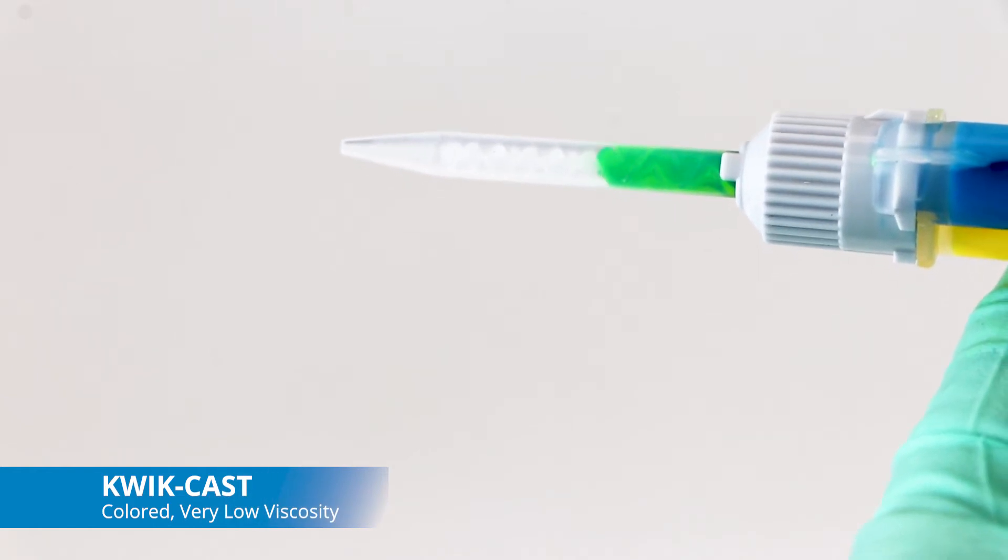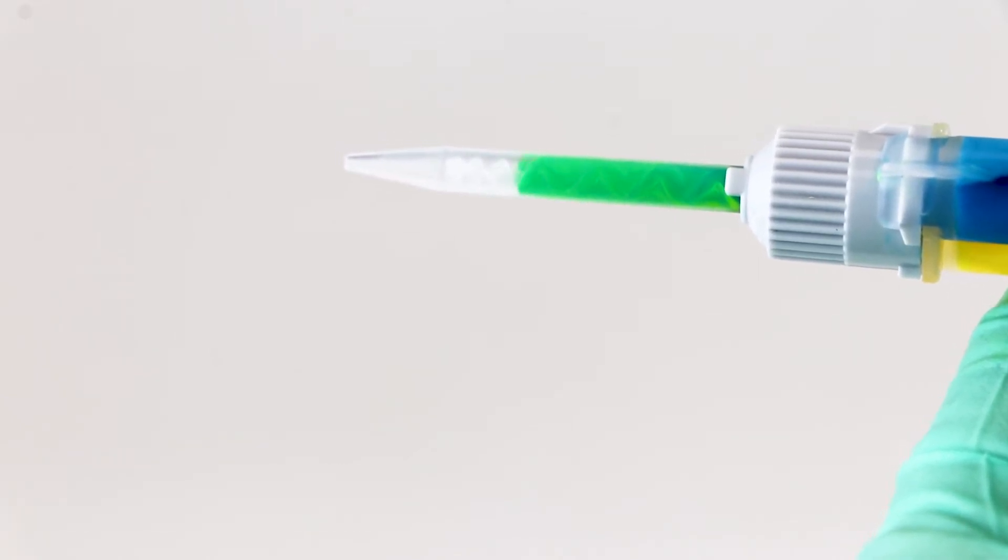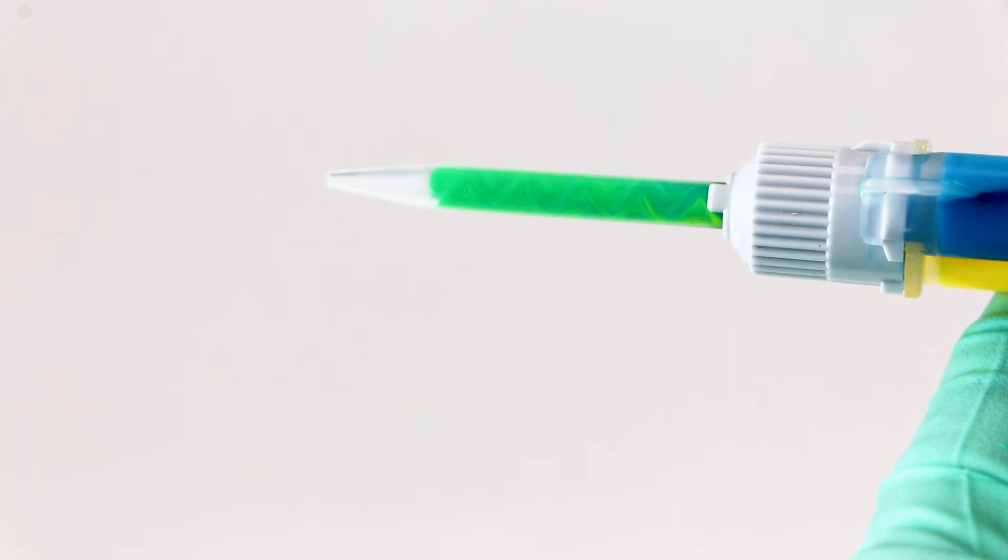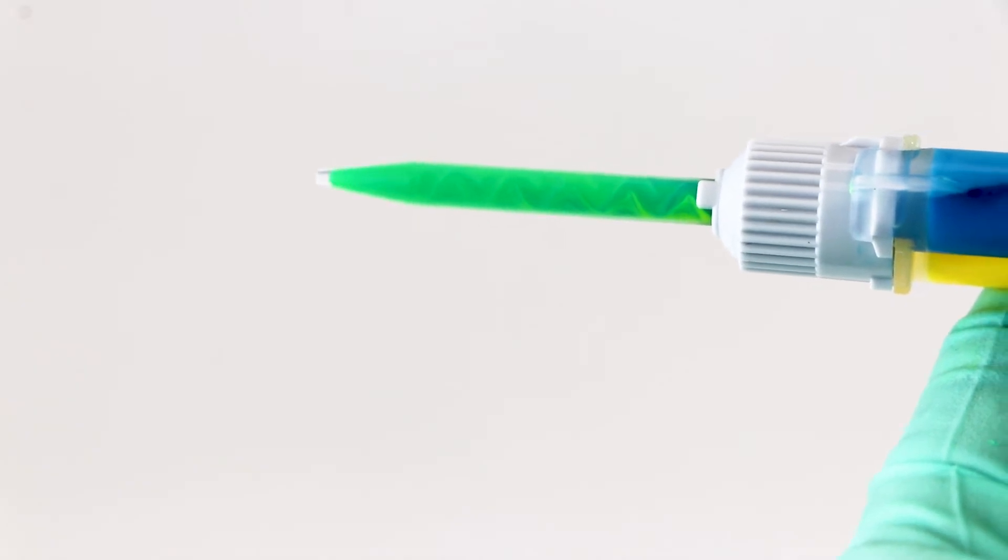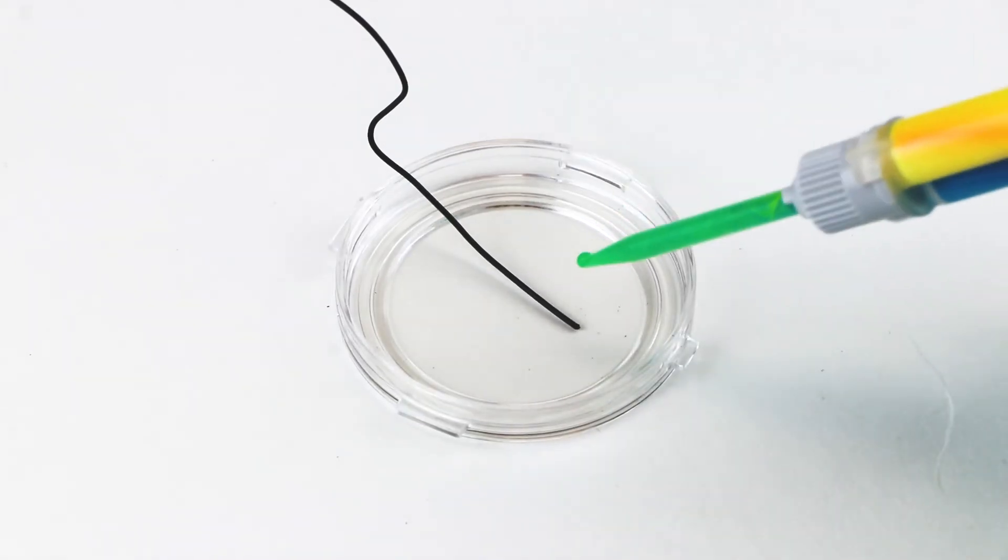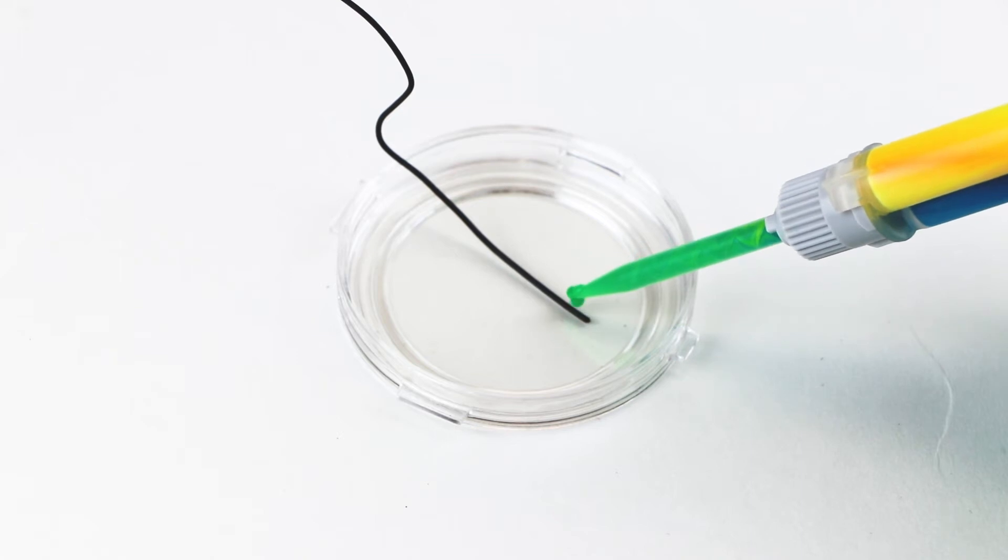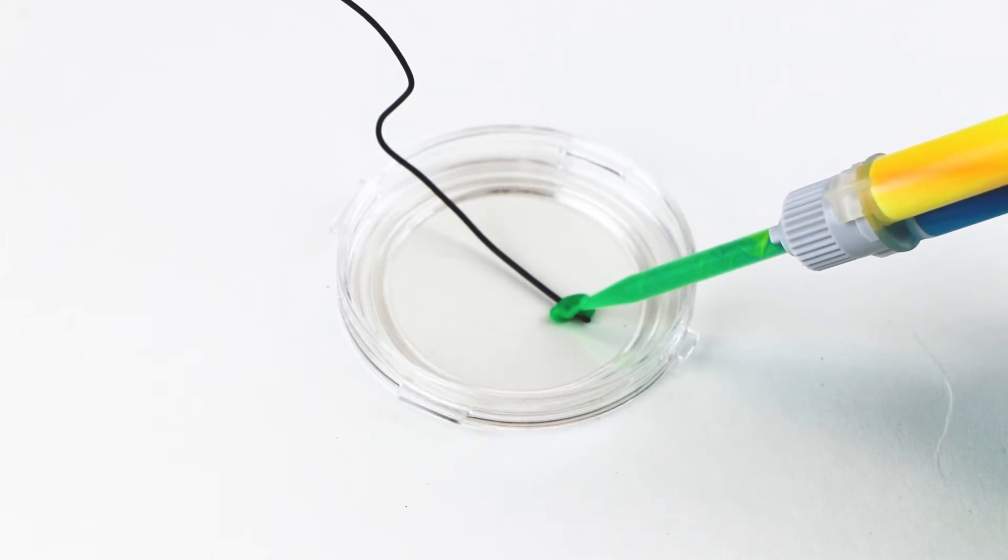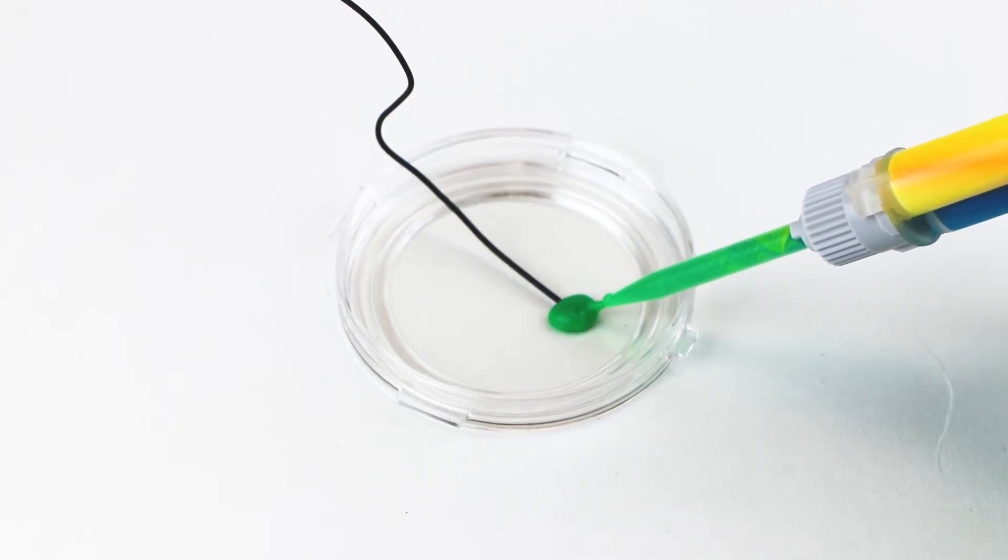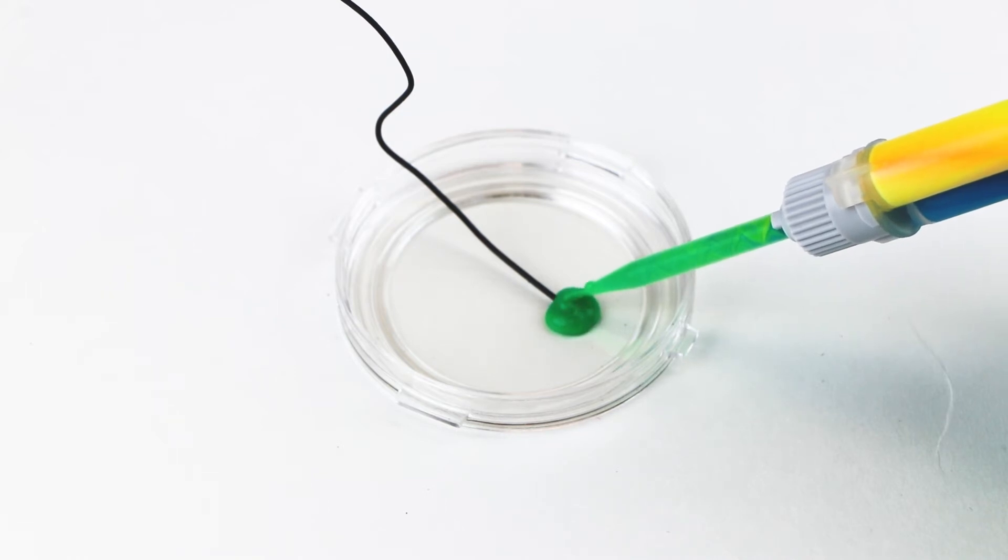Kwik-Cast is a very low-viscosity silicon sealant developed to embed peripheral nerves with electrodes for acute multifiber recordings. It flows easily, filling small spaces around the nerve and leaving no channels through which peritoneal fluid can travel and short the nerve-electrode contact.